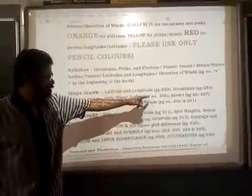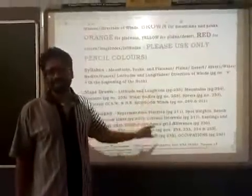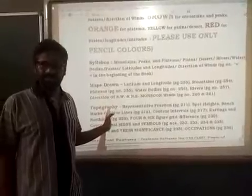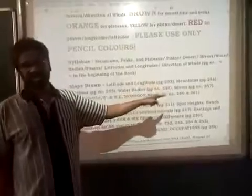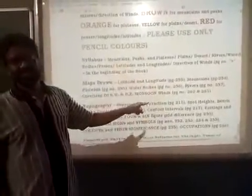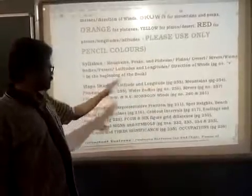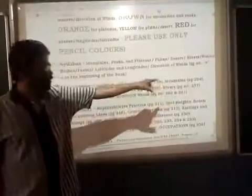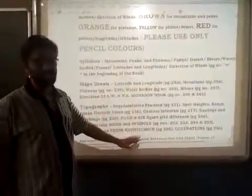Please go through the syllabus. I have already mentioned that if you go through the assignment, you will find the page number. Your book is well designed — the syllabus is in the beginning of the book. Everything is demonstrated, explained, and given towards the end of your book. For instance, latitude and longitude is on page 253, mountains on 254, plateaus on 255, and so on.